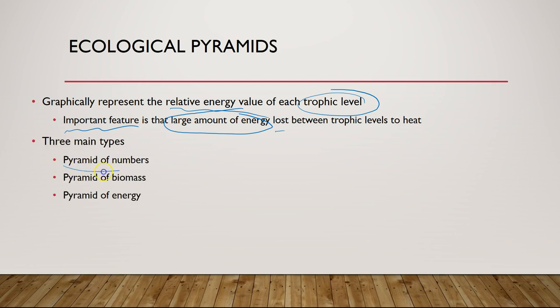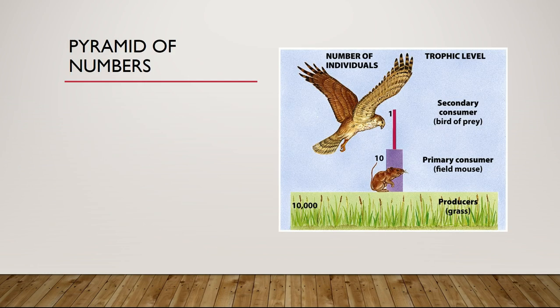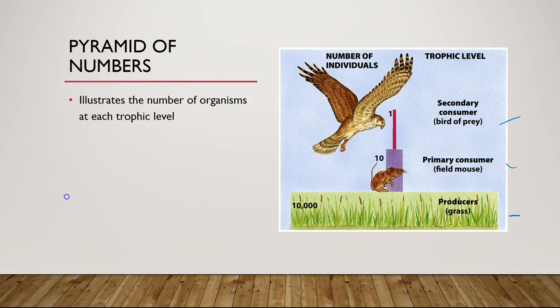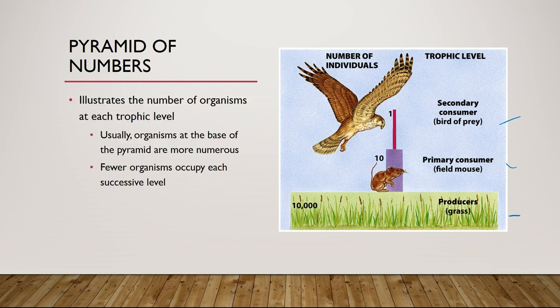We have three main types: the pyramid of numbers, pyramid of biomass, and pyramid of energy. A pyramid of numbers shows our producers at the bottom, graphically illustrating the decrease in numbers as you move up the food chain, showing the number of organisms at each trophic level.